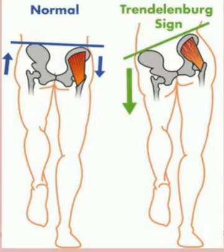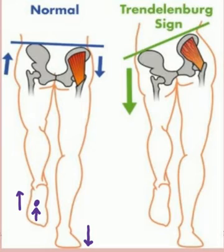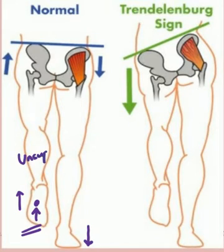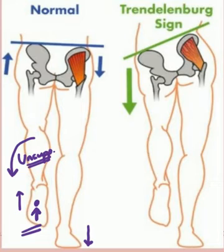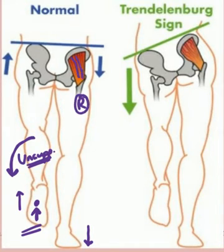Now we ask the patient to lift the left leg, so the right limb remains on the ground. The left side is now off the ground, meaning it becomes the unsupported side. Since the left side is unsupported, it should ideally fall down when the patient lifts the left leg.